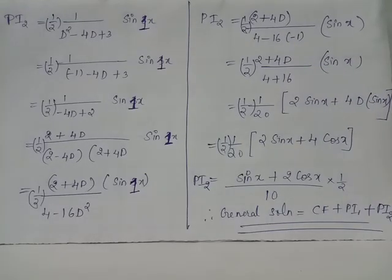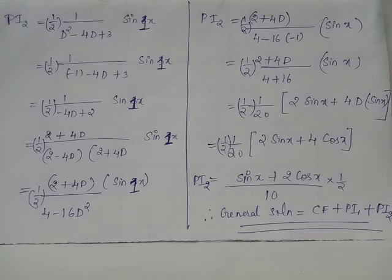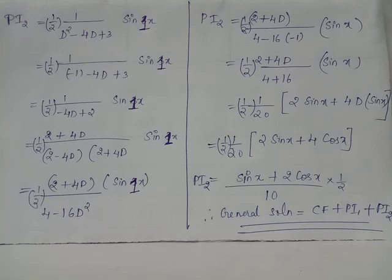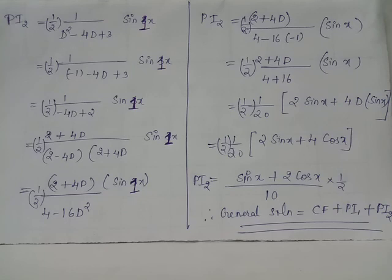Similarly, PI2 = (1/2)·[1/f(D)]·sinx. Replacing D² by -1², the denominator becomes 2 - 4D. Multiplying numerator and denominator by (2 + 4D), the numerator becomes 2sinx + 4cosx and the denominator becomes 4 - 16D² = 4 - 16(-1) = 20. Thus PI2 = (sinx + 2cosx) / 20.